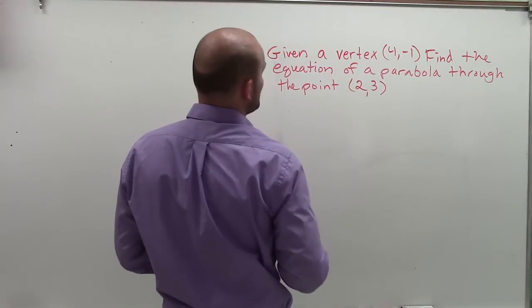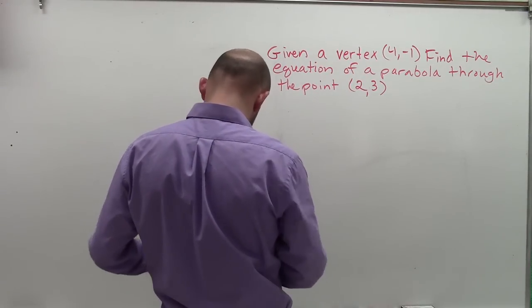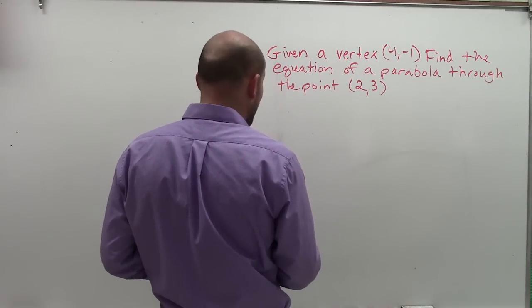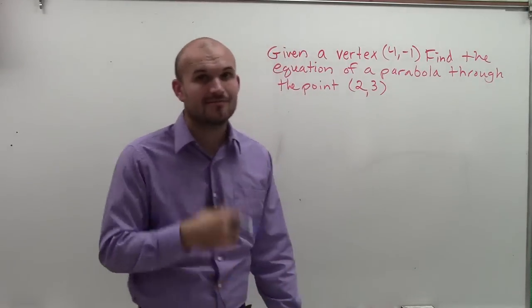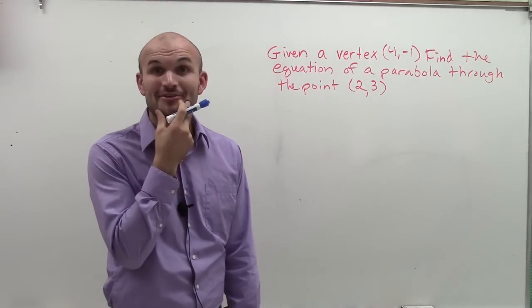Given a vertex 4 comma negative 1, find the equation of a parabola through the point 2 comma 3. Good one, right?